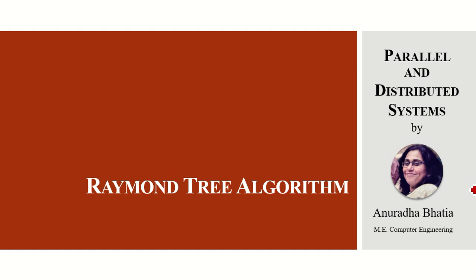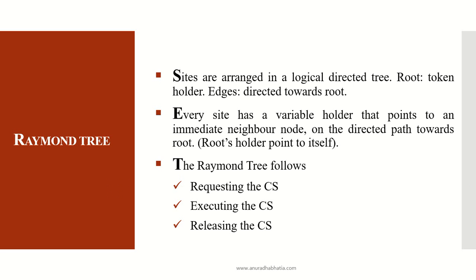We will see the Raymond Tree algorithm for parallel and distributed systems. Raymond Tree algorithm is a token-based algorithm which uses a unique token shared among all the sites. A site is allowed to enter its critical state if it possesses that token. So Raymond Tree is a token-based algorithm for mutual exclusion.